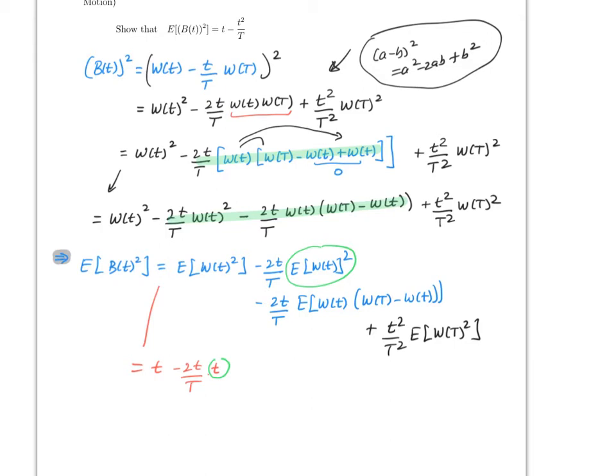Now let's go to the second part of chapter 17. Everything so far is related to Brownian motion, specifically the Wiener process which is the standard Brownian motion. We showed that Brownian motion has independent increments, which makes things easier, and also that Brownian motion is a martingale.